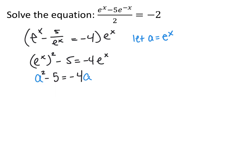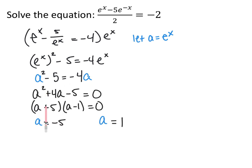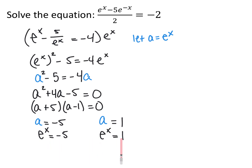This looks like something I already know how to solve: I have something squared, a linear version of that something, and a constant. I let a equal e to the x, replacing e to the x with a, giving a squared minus 5 equals negative 4a. Moving everything to one side: a squared plus 4a minus 5 equals 0, which factors as (a+5)(a−1) equals 0, so a equals negative 5 or a equals 1. I'm not solving for a — I'm solving for x — so I replace a back with e to the x. Since e to the x can never equal a negative number, that case gives no solution.